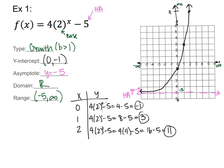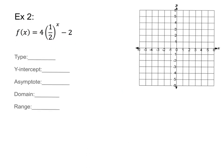Let's do another example. This function has a base of one half. Since one half is between zero and one, this is a decay. The horizontal asymptote is at y = −2, so I'll draw a dashed line at y = −2.